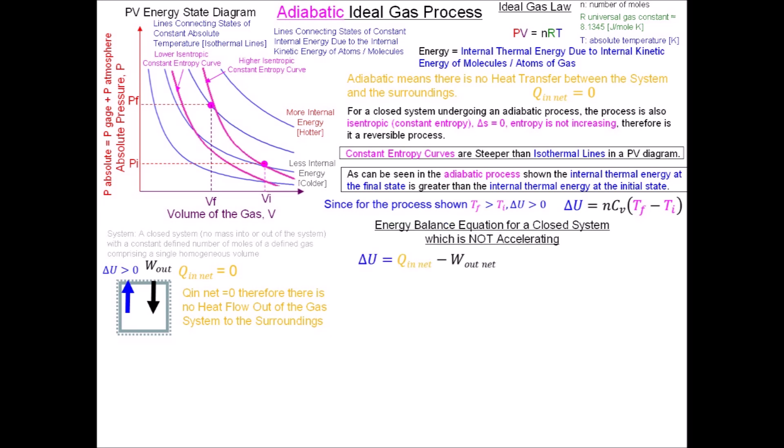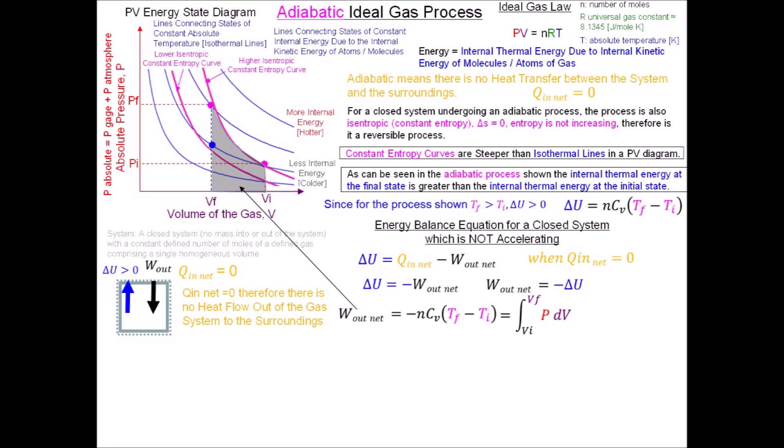Using conservation of energy for this closed system, the energy balance states that the change in internal thermokinetic energy equals the energy in terms of heat in minus the energy in terms of work out. For this adiabatic case where heat in equals zero, the energy balance becomes: change in internal thermal energy equals minus the net work out. Therefore work out equals minus delta U, or minus N times C sub V times delta T. The work out is also the area under the pressure curve from initial volume to final volume, shown in integral form.